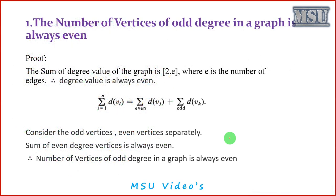We will discuss some of the theorems which are needed to describe the properties of a graph. The first theorem is: the number of vertices of odd degree in a graph is always even. You know what is meant by a degree value of a vertex — the number of incidences is called the degree value. Let us consider the proof.